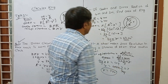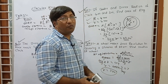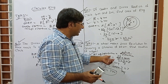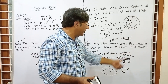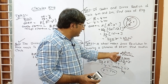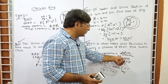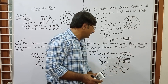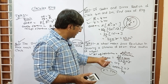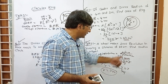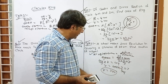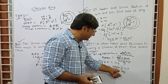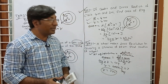So the answer is r equals 7 metres. This question is very important. The key formula is: number of revolutions equals total distance divided by circumference of the wheel. Here revolutions are 2000 and distance is 88 km equals 88 into 1000 metres. Circumference is 2 into 22 by 7 into r. After simplification r equals 7 metres.